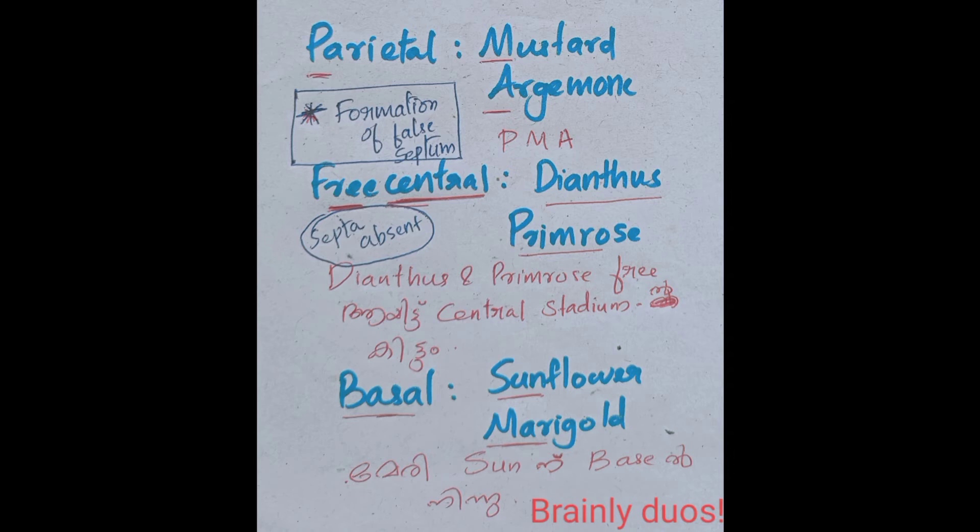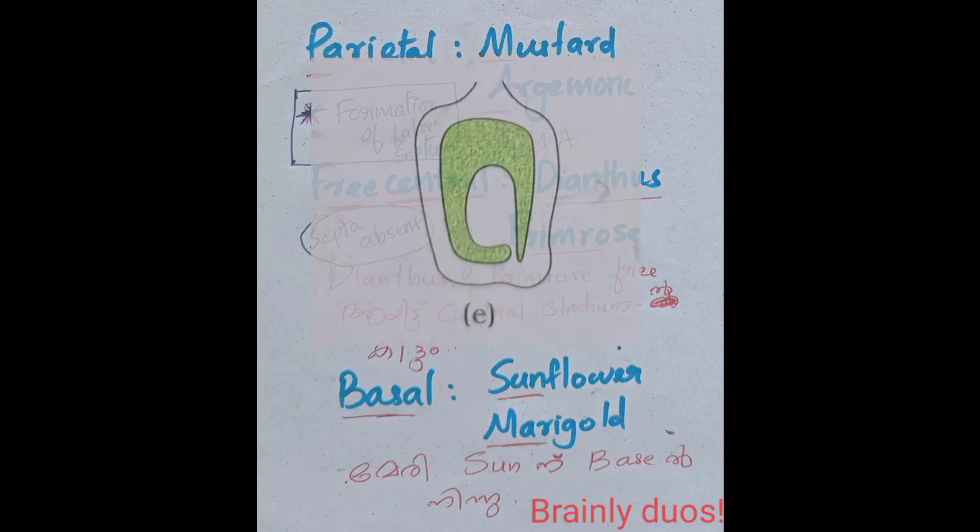Next placentation is basal placentation. Basal placentation is called placentation. If you develop a single ovule, then you can use basal placentation.